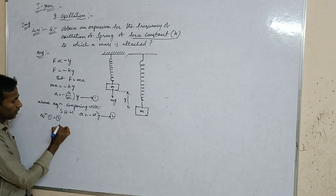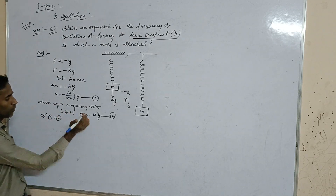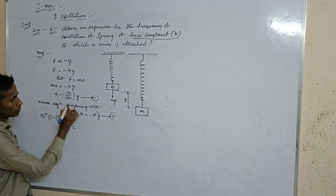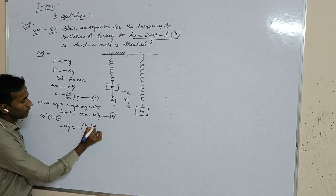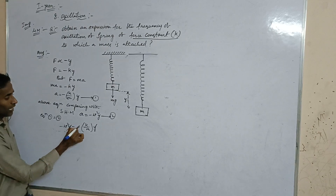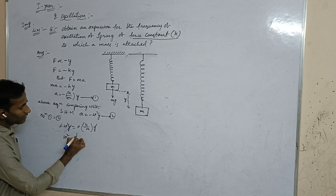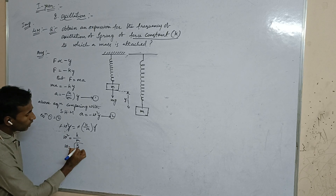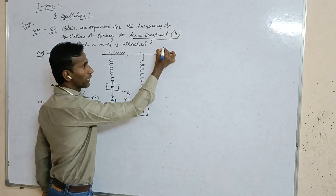The y terms cancel and the minus signs cancel, giving: omega squared equals k over m. Therefore, omega equals the square root of k over m.